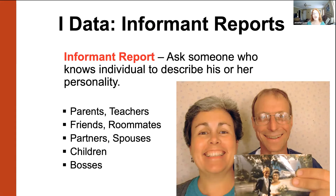Let's move on to the type of data where you ask a friend, teacher, boss, or co-worker about the target. You can find out information about what that target is like from asking people that know them — these are called informant reports. You typically want to pick somebody who knows that person fairly well. Someone can ask your children, friends, roommates, spouses, parents, co-workers, and so on. Those are all informant report data, and you can get a lot of information about somebody this way.